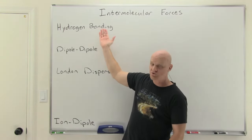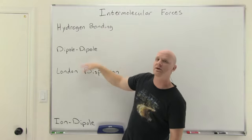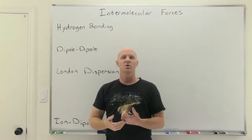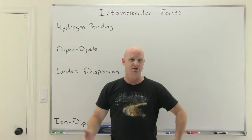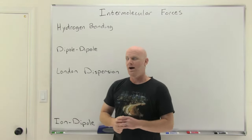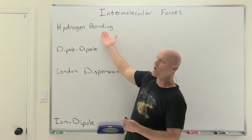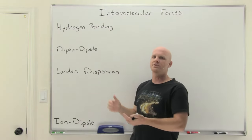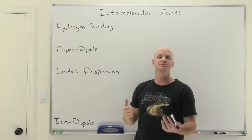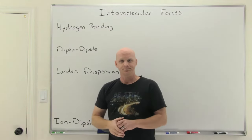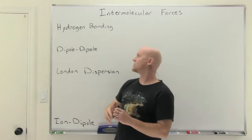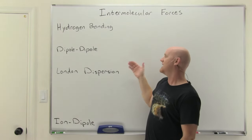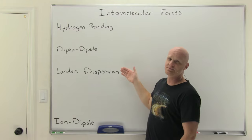Hydrogen bonding, the strongest of our intermolecular forces, is usually on the order of 25 to 100 fold weaker than an actual covalent bond. So even if we call it hydrogen bonding, it's much, much weaker than an actual covalent bond. Hydrogen bonding is the strongest of our intermolecular forces, followed by dipole-dipole forces, and then London dispersion forces.